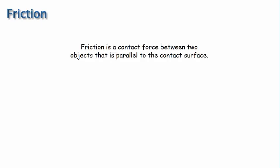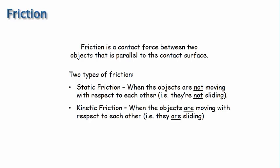We've mentioned the friction force several times in previous videos. Now we'll discuss friction in detail. Friction is a contact force between two objects that is parallel to the contact surface. There are two types of friction: static friction, when the object is not moving with respect to the other — that is to say, they're not sliding.